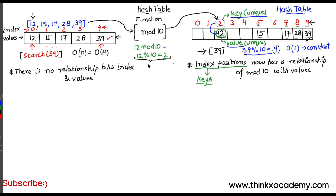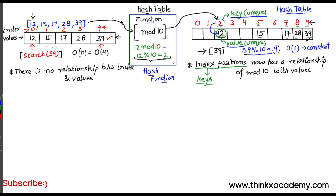This is a hash table. The function we used — which can change — is called a hash function. You can use different hash functions to draw the relationship between keys and values; the more complex the data, the more complex the hash function will be. The whole procedure of mapping keys to values using a hash function is known as hashing.